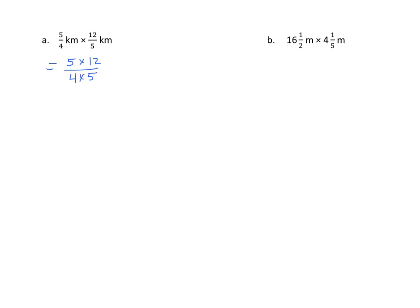So that's the same as 5 times 12 over 4 times 5. Well, we can find common multiples now. 5 divided by 5 is 1, 5 divided by 5 is 1, 12 divided by 4 is 3, and 4 divided by 4 is 1. And the answer is 3. Our unit is 3 kilometers squared.